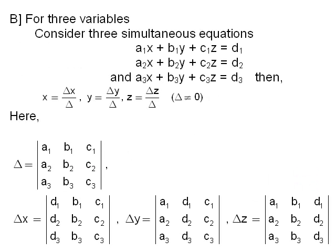Cramer's rule for equations involving three variables. We extend Cramer's rule to three simultaneous equations in three unknowns x, y, and z. Let a1x + b1y + c1z = d1, a2x + b2y + c2z = d2, and a3x + b3y + c3z = d3. Then by Cramer's rule, x = Δx/Δ, y = Δy/Δ, and z = Δz/Δ, provided Δ ≠ 0.